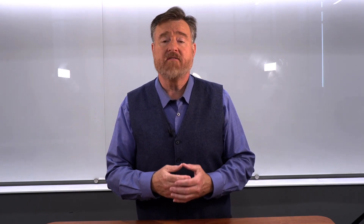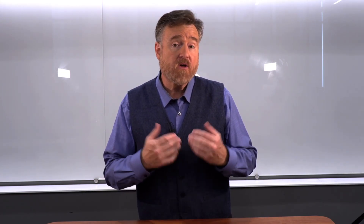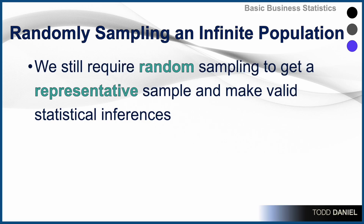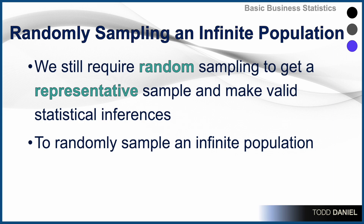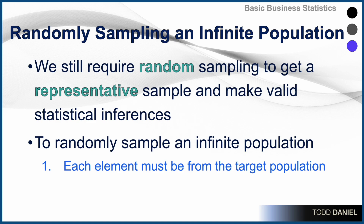I just said that we could take a sample from a population where the values of the population are unknown — but how do we do that? The answer is we're going to use the same types of random sampling techniques that we could use with a finite population. We will still use random sampling to get a representative sample from our infinite population, allowing us to make valid statistical inferences. To randomly sample an infinite population, each element must be from the target population and each element must be selected independently.